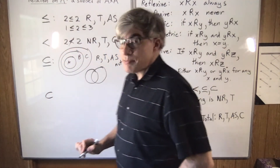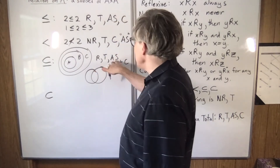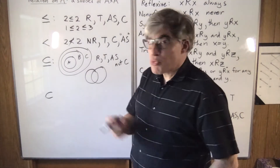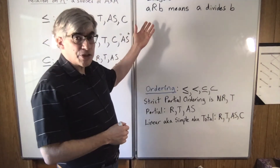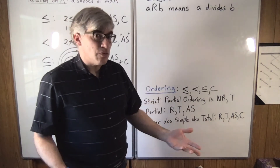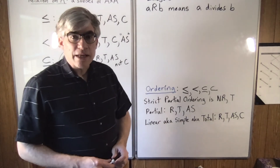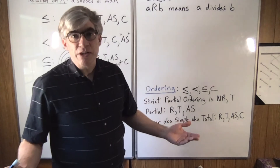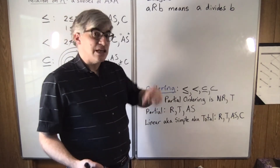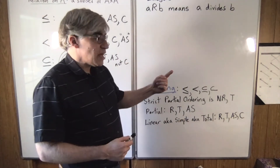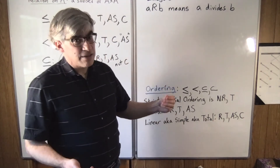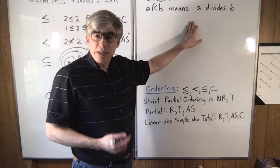Likewise, for proper subset, the only thing that changes is that antisymmetric becomes vacuously true and reflexive gets replaced with non-reflexive — nothing is ever a proper subset of itself. Another example: on the integers, say a is related to b means a divides b. So 2 divides 4, 3 divides itself, 4 does not divide 2. That is a partial ordering because some numbers don't divide each other, like 5 and 7. Anything divides itself so it's reflexive; if a divides b and b divides c then a divides c so transitive; if a divides b and b divides a then a equals b so antisymmetric. But a divides b does not mean b divides a, so not symmetric. Divisibility is a partial ordering.